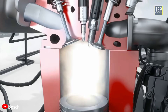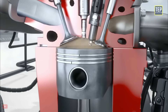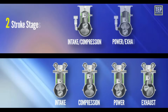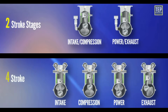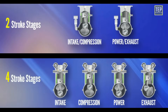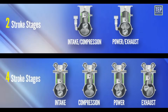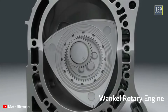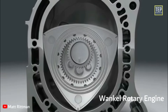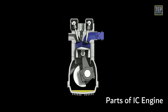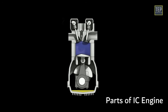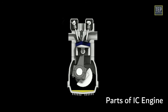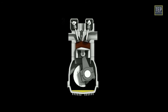The term internal combustion engine usually refers to an engine in which combustion is intermittent, such as the more familiar two-stroke and four-stroke piston engines, along with variants such as the six-stroke piston engine and the Wankel rotary engine.